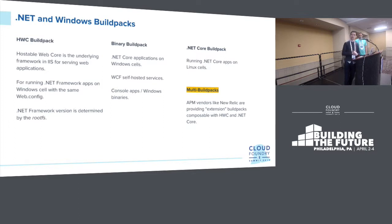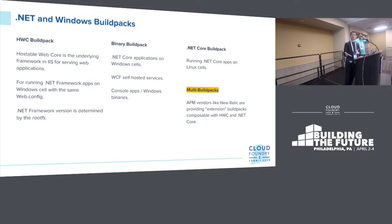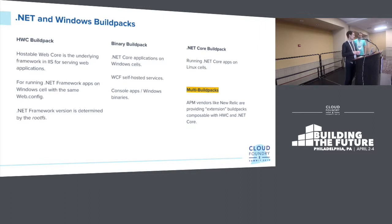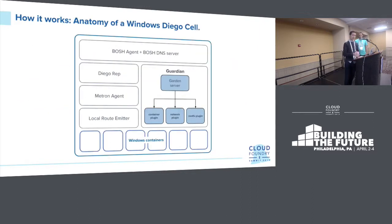The binary build pack supports binaries and console apps. The .NET Core build pack in the Cloud Foundry build packs library is for running .NET Core apps on Linux — generally what we recommend for modernized Greenfield apps. Just recently, our teams have implemented multi-build pack support for the HWC build pack, which has enabled APM vendors like New Relic and AppDynamics to build integrations with Cloud Foundry, automatically installing the agent inside the container when the app is scheduled.